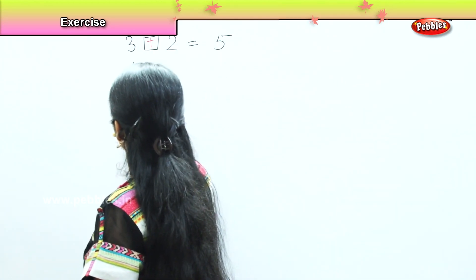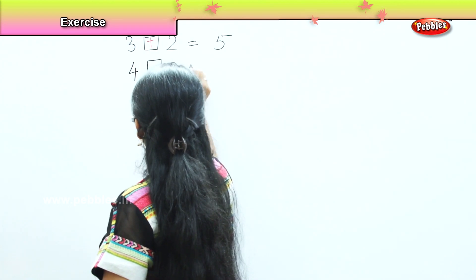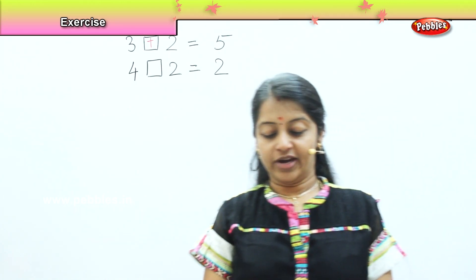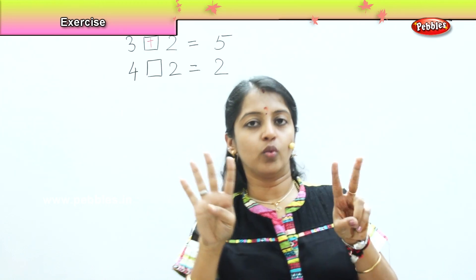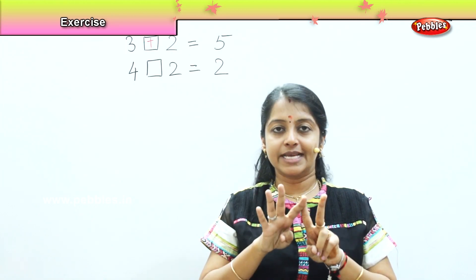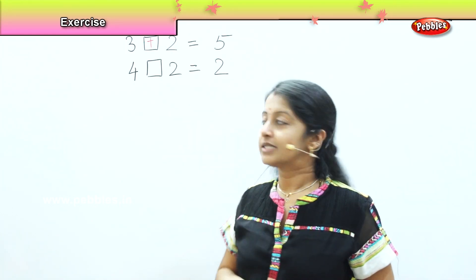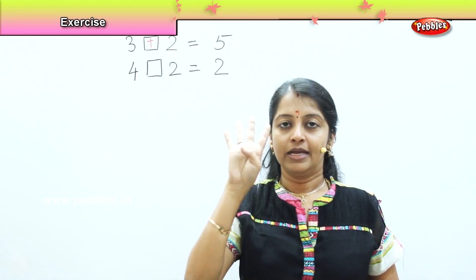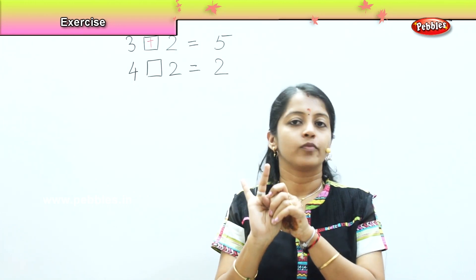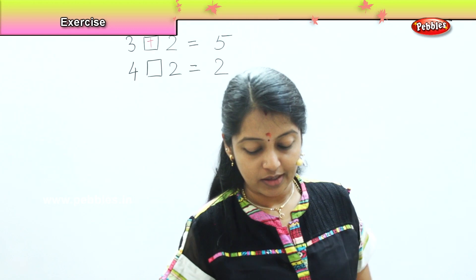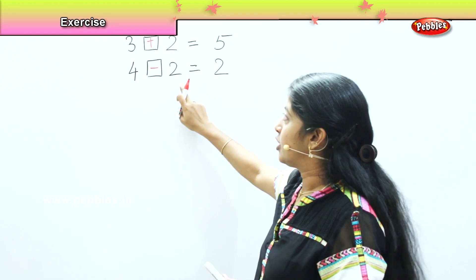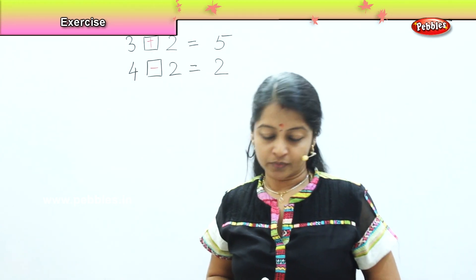Now: four, two, two. If I take four in one hand and two in another, I get one, two, three, four, five, six — but the answer given is two. So if I have four and reduce two, the balance is two. Here I need to put a minus symbol. Four when reduced by two gives the answer two — it is subtraction.